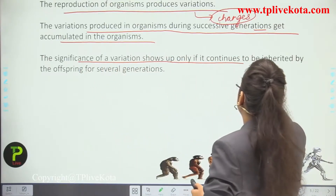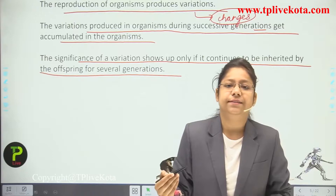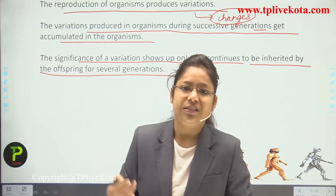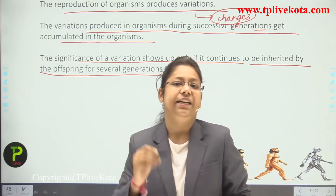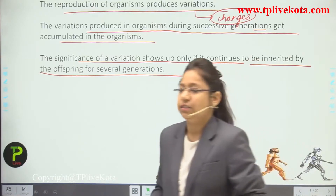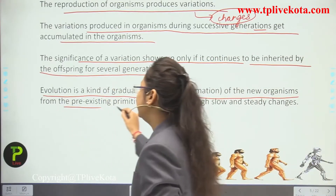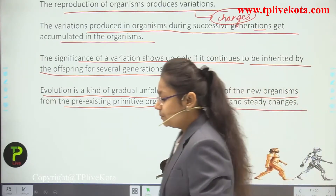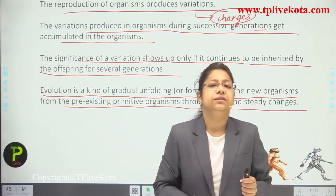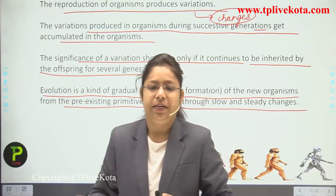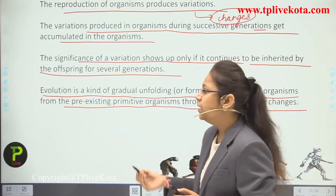The significance of variation shows up only if it continues to be inherited by offspring for several generations — the gene is carried on and this is known as heredity. Evolution is a gradual unfolding of new organisms from pre-existing primitive organisms through slow and steady changes, because of environmental factors and surroundings. Some somatic and genetic changes occur in a person's body over time, and these changes are known as evolution.